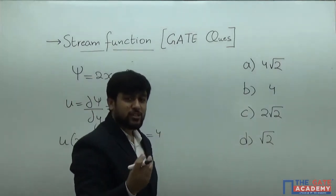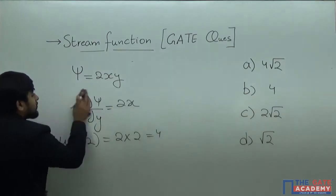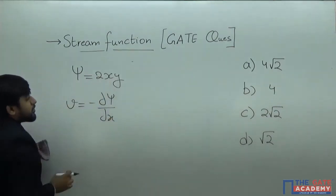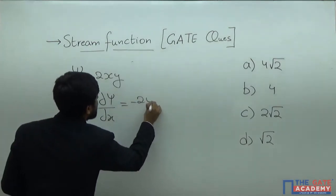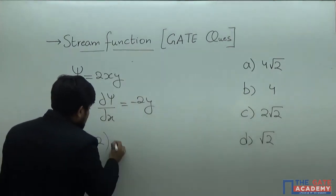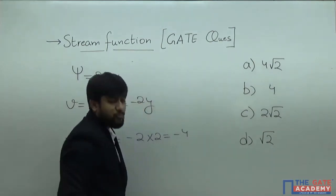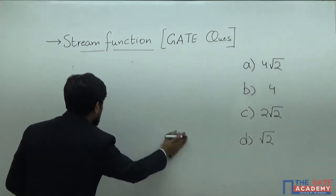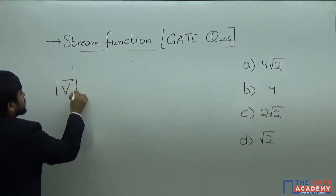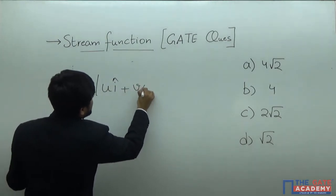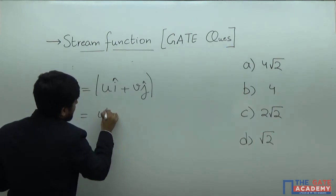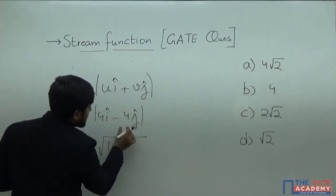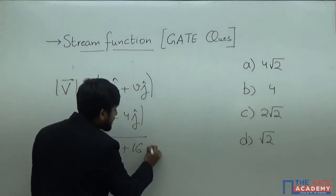Similarly, v is equal to minus of del psi by del x. Partially differentiating with respect to x, we get minus 2y. At point (2,2), this becomes minus of 2 into 2, so v equals minus 4. So the u-component is 4 and the v-component is minus 4. The resultant velocity is the magnitude of vector 4i-cap minus 4j-cap, giving under root of 16 plus 16.